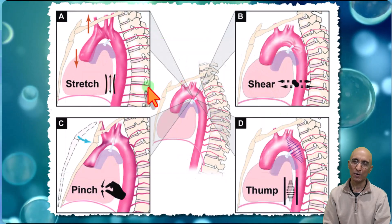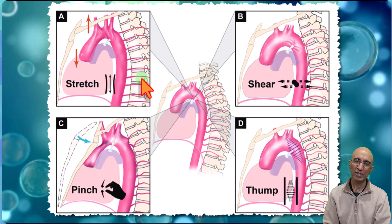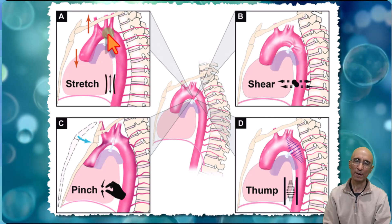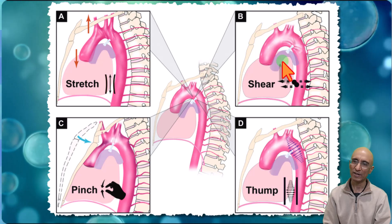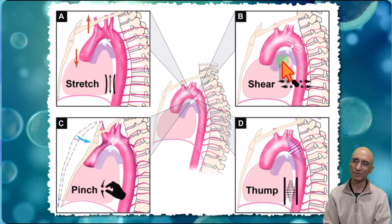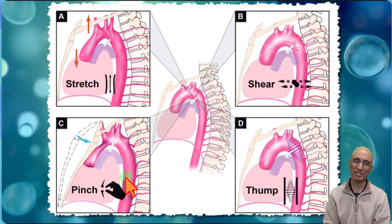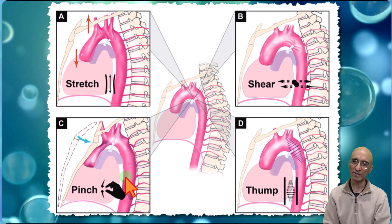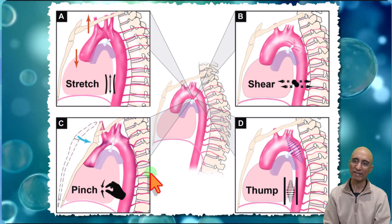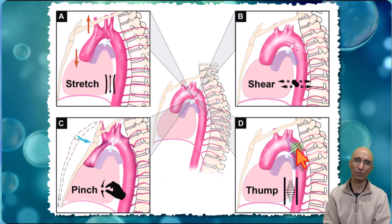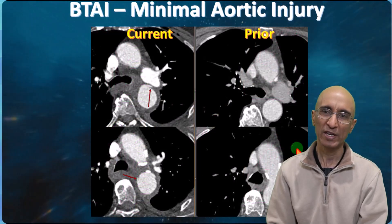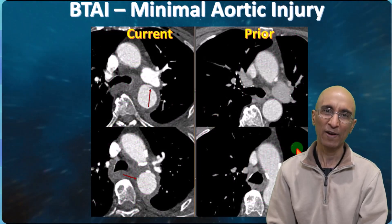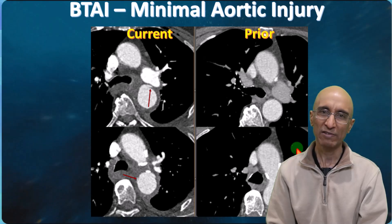Possible etiologies for injury to the thoracic aorta in blunt traumatic aortic injury include stretching or shear effect at the site of attachment of the ligamentum arteriosum, pinching between osseous structures, or increased intravascular pressure causing a water hammer effect. I hope you found this case of minimal aortic injury, where the findings can be subtle, to be interesting and informative. Thanks for your attention.